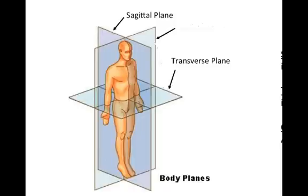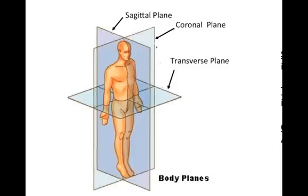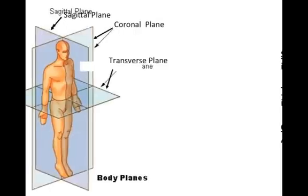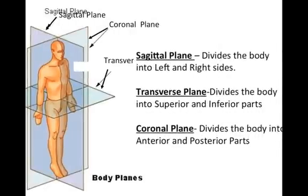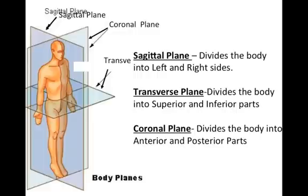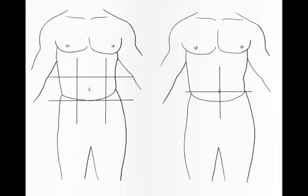The transverse plane and the coronal plane. These also help us communicate the location of certain body parts. The sagittal plane divides the body into left and right sides. The transverse plane divides the body into superior and inferior parts while the coronal plane divides the body into anterior and posterior parts.